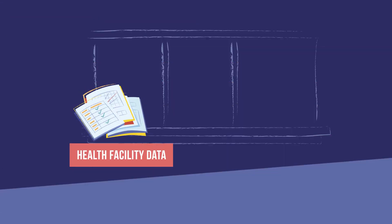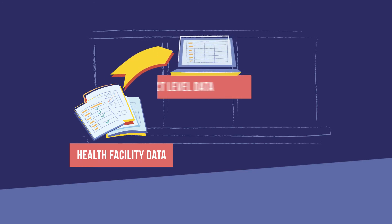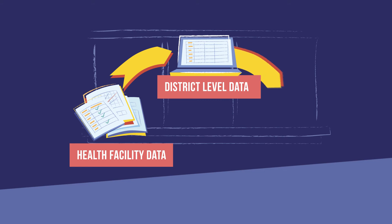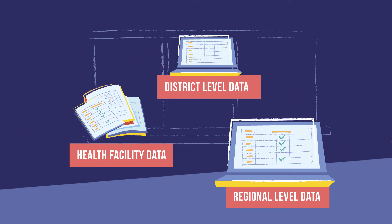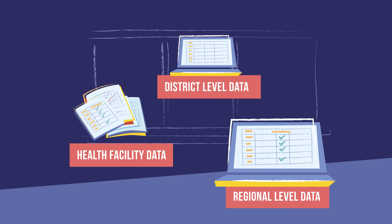Once health facilities have collected their data for the month, they compile it into a monthly form and send it to the district level. Next, people at the district level compile the data from each health facility, put it into a monthly report, and forward it to the regional level. In turn, people at the regional level compile and forward data to the next level. Ultimately, everything is sent to the national level.